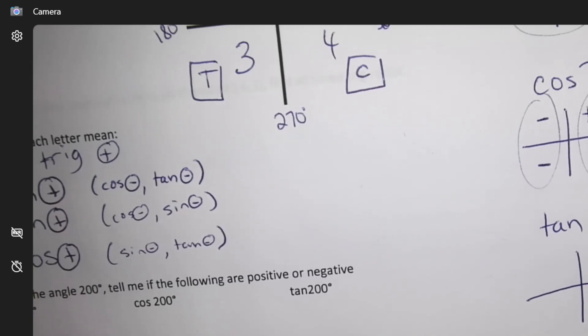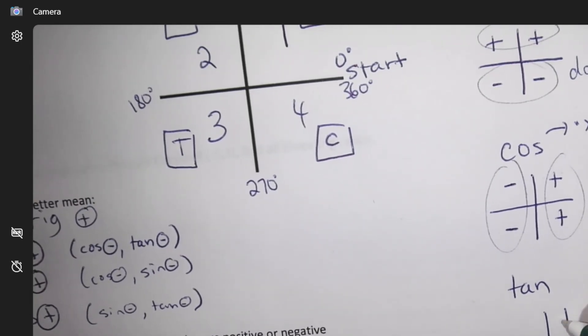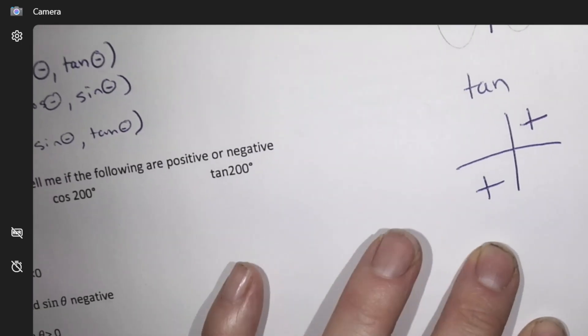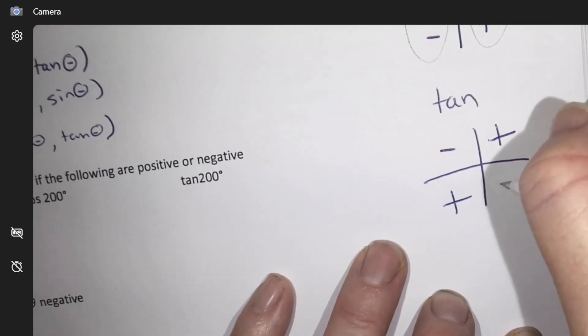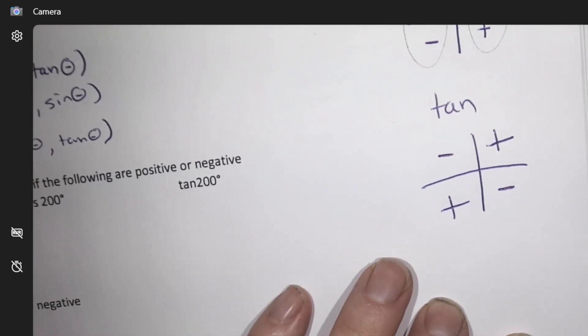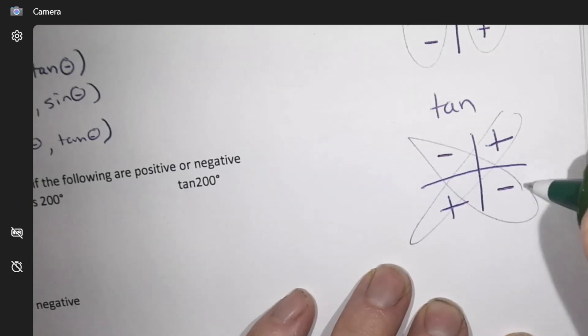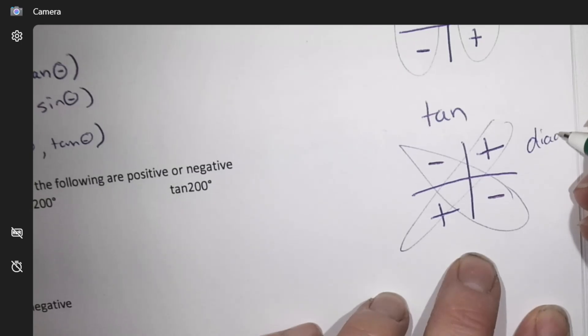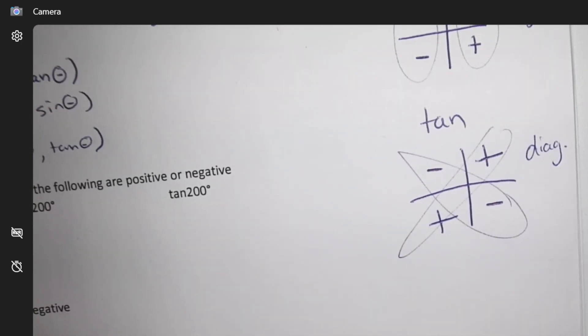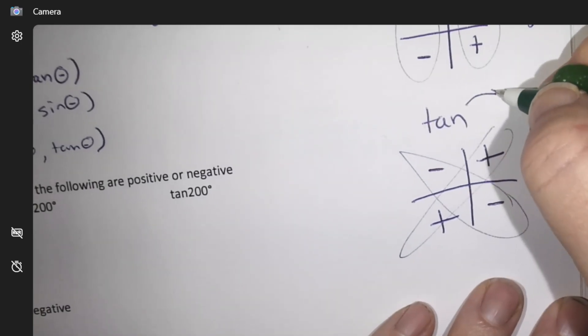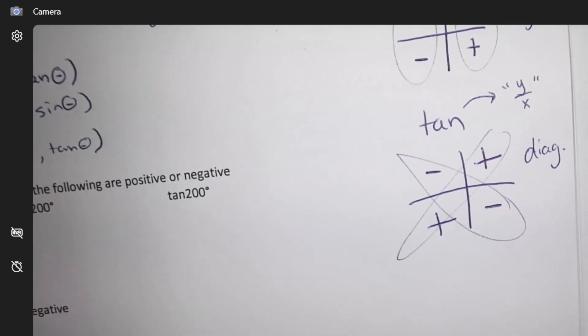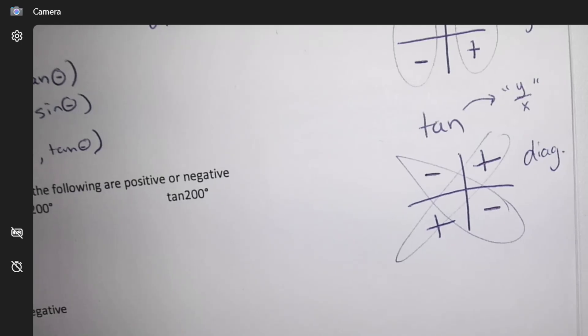Tangent. Tan is positive in the A and the T. So where is it negative? 2 and 4. So tan splits diagonally then. We got up and down split. We have a left-right split and a diagonal split. And you're going to learn later that tan is going to be connected to Y divided by X.